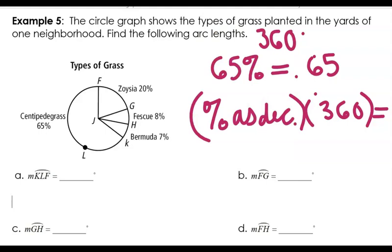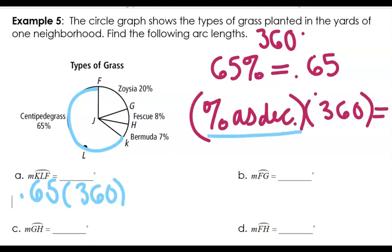So when I look at arc KLF — that is 65% — so that is 0.65 times 360. All I'm doing is changing this percent to a decimal. This is going to tell me that this arc is 234 degrees.